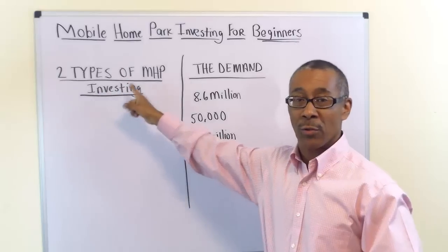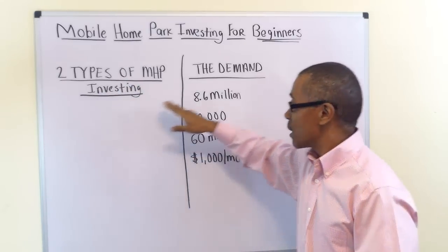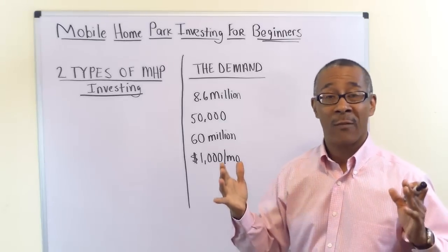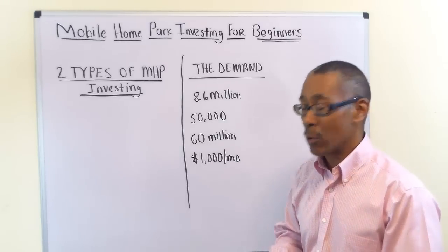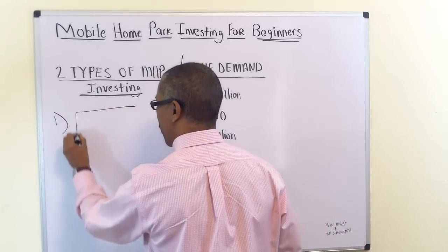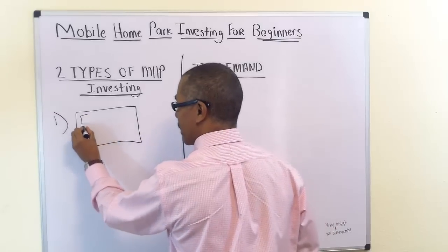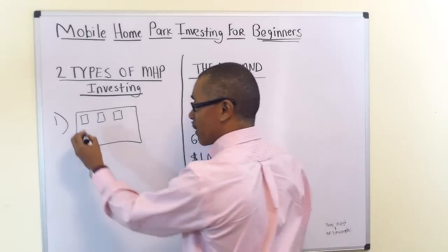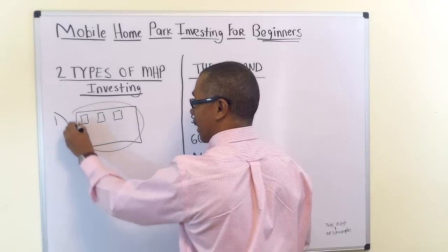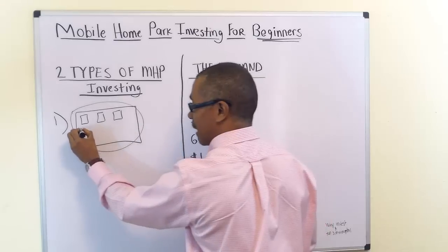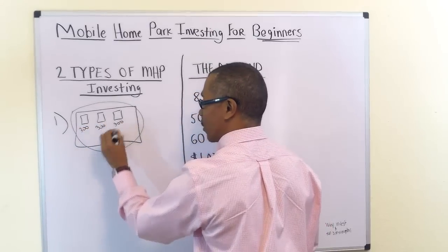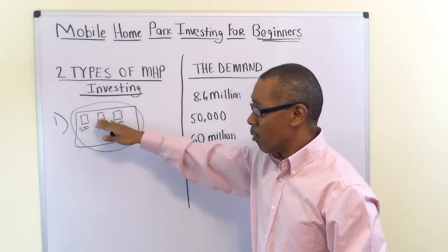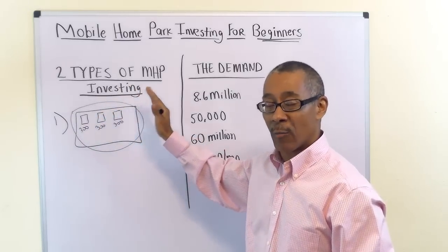There are two types of mobile home park investing or ownership. The first form is you purchasing the land and renting out the spaces — let's say each space gets $300. You'll be collecting rents each month for these spaces. The homes on the lots are owned by the residents — you do not take care of the homes. You take care of the roadways, the amenities, utilities, things like that.